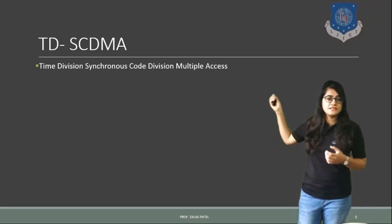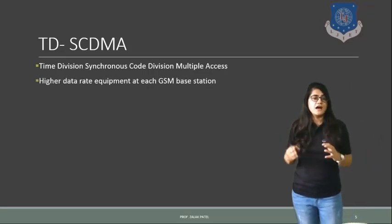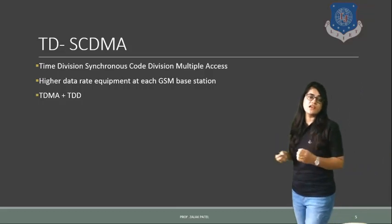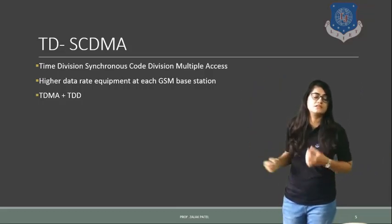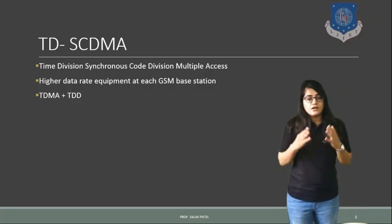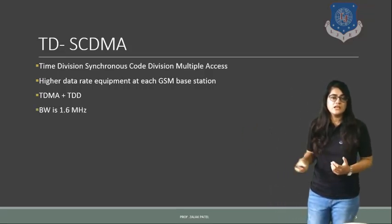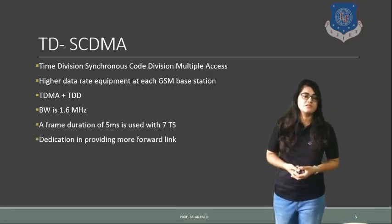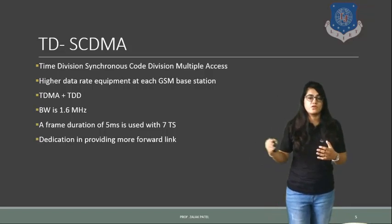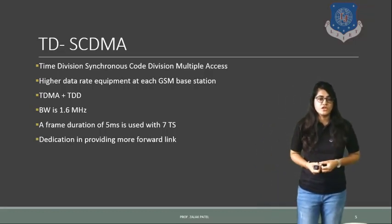For TD-SCDMA — Time Division Synchronous Code Division Multiple Access — higher data implementation with GSM base stations is possible. The access technique used is TDMA, and TDD duplexing is employed, meaning transmitting and receiving is possible simultaneously but in different time slots. Its bandwidth is 1.6 MHz. The frame duration is 5 ms with 7 time slots. It also provides dedication to forward-link communication. This concludes the third generation wireless communication standards.